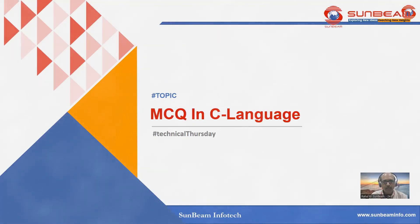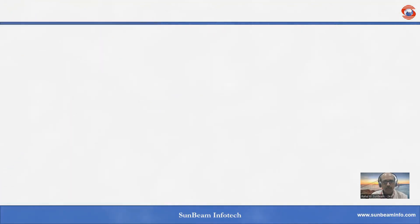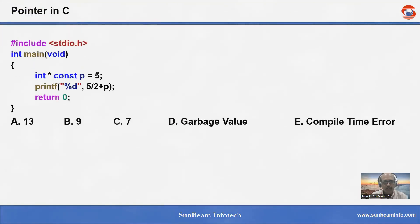Good morning everybody. The topic of today's Technical Thursday is MCQ in C language. The subtopic is pointers in C. Look at the MCQ: integer pointer p is equal to 5, printf percent d, 5 divided by 2 plus p. What will be the output?